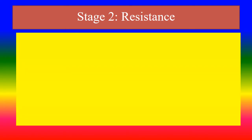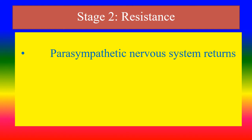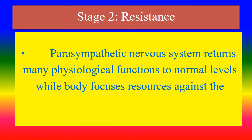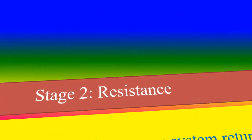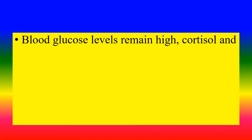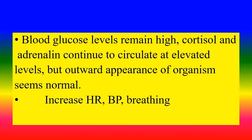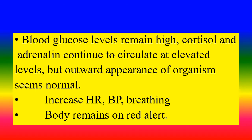Stage 2 — Resistance: The sympathetic nervous system returns many physiological functions to normal levels while the body focuses its resources against the stressor. Blood glucose levels remain high; cortisol and adrenaline continue to circulate at elevated levels. But outwardly, the appearance of the organism seems normal. Heart rate, blood pressure, and breathing remain increased, and the body remains on high alert.